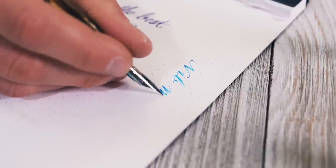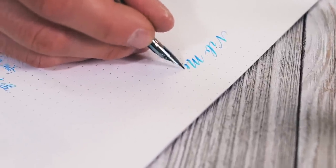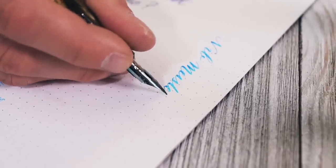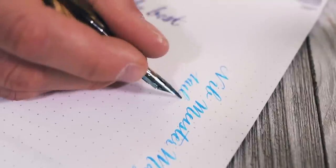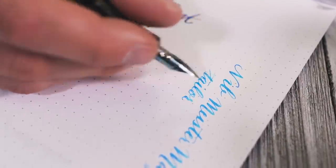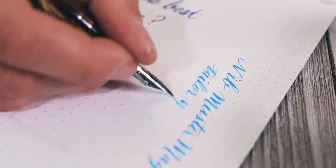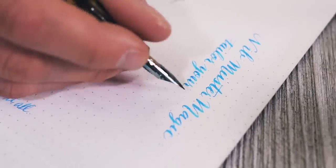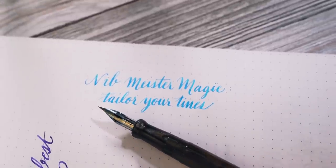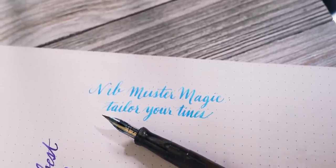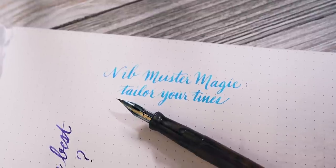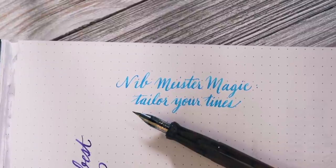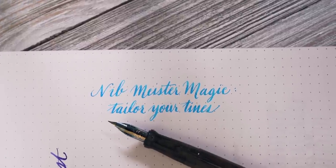Instead of buying the factory version of a stub or flex nib, many fountain pen enthusiasts opt for a highly tailored experience of sending their pens to be modified by a nib meister. You can sign up for an in-person appointment at a pen show or send away your pens for customization. The result is a nib crafted to your exact specifications. The one caveat is that any modification to a nib will void the warranty of the pen. For that reason, Goldspot Pens does not perform these modifications to pens sold through our store.